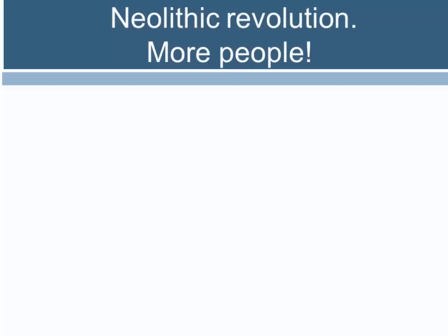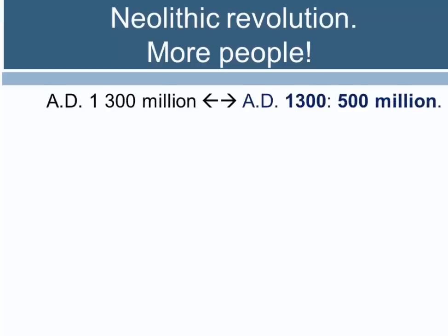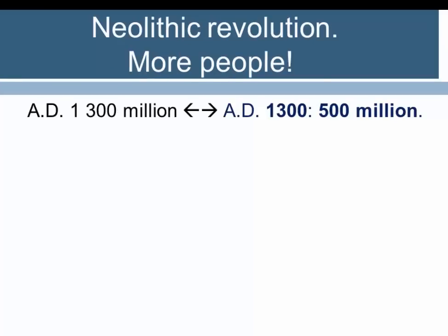Then a more dramatic change occurs: the Neolithic Revolution — the invention of agriculture. In the Old World, this included the development of livelihoods based on domesticated livestock. This brought about a great surge in population growth. By roughly AD 81 on the Western calendar, the global population had reached somewhere around 300 million people.